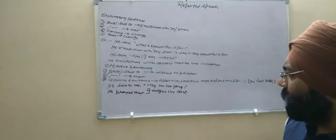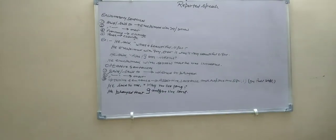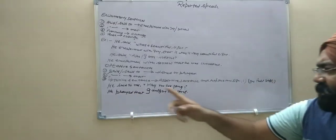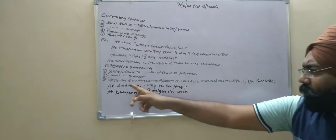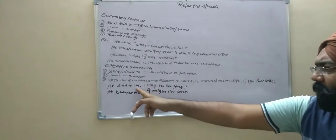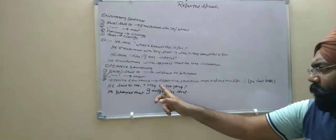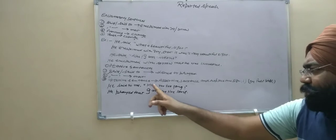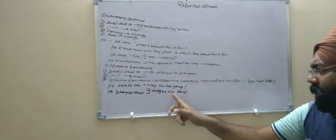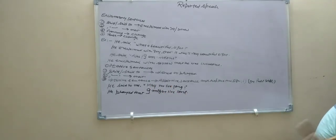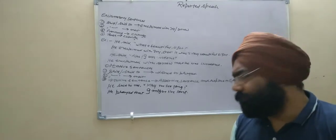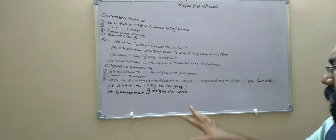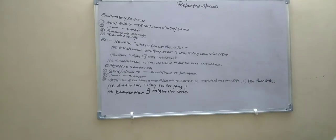He said to me, may you live long. He prayed that I... you change according to second person, me. Me ki first form, I. May change to might. I might live long. Might also modal, modal ke first form, live. Live long. Exclamation symbol change to full stop.